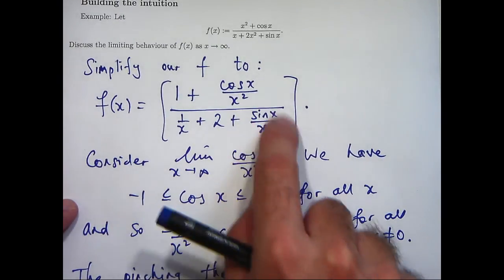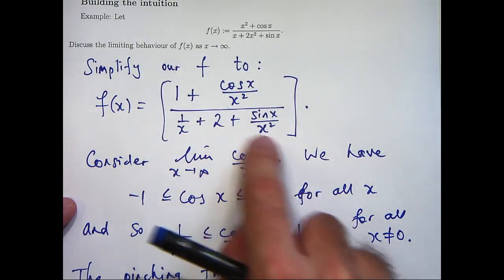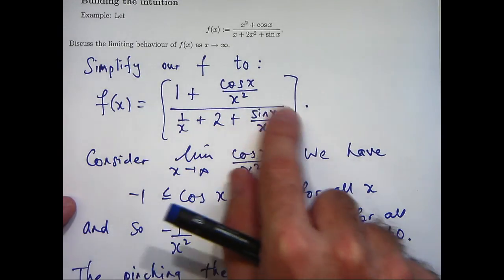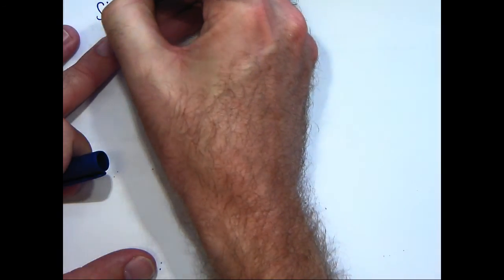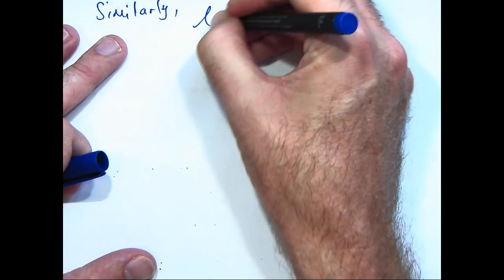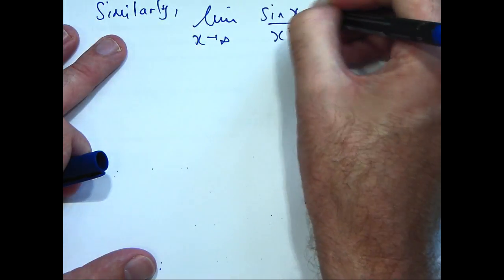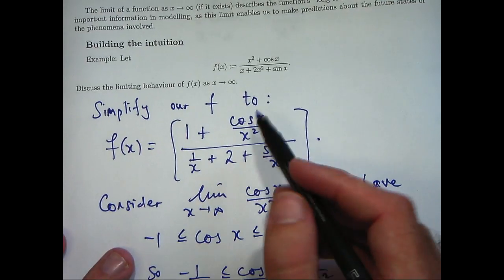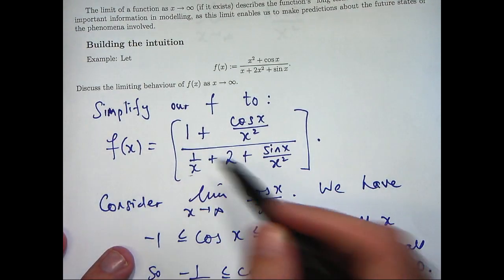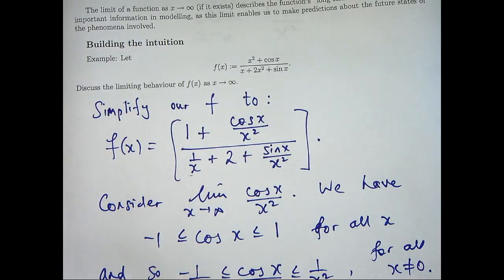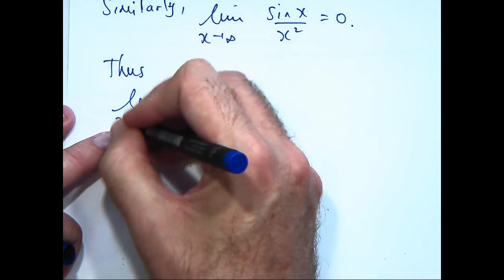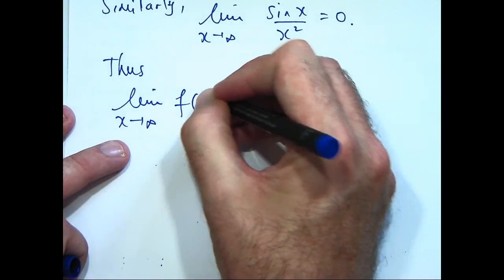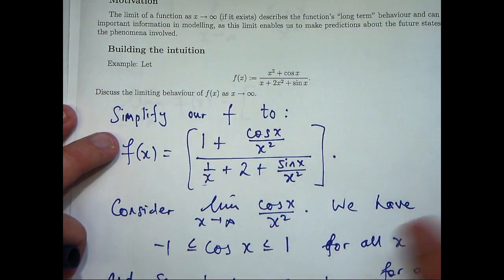Similarly, you can go through the same steps for sin(x)/x² as x approaches infinity and get that limit equals 0 as well. So putting all that information together: the limit of cos(x)/x² is 0, the limit of sin(x)/x² is 0, the limit of the remaining term is also 0. Using basic limit laws, I basically get 1 over 2 as x gets large and positive for f(x). So the function tends to positive one half in the long run.